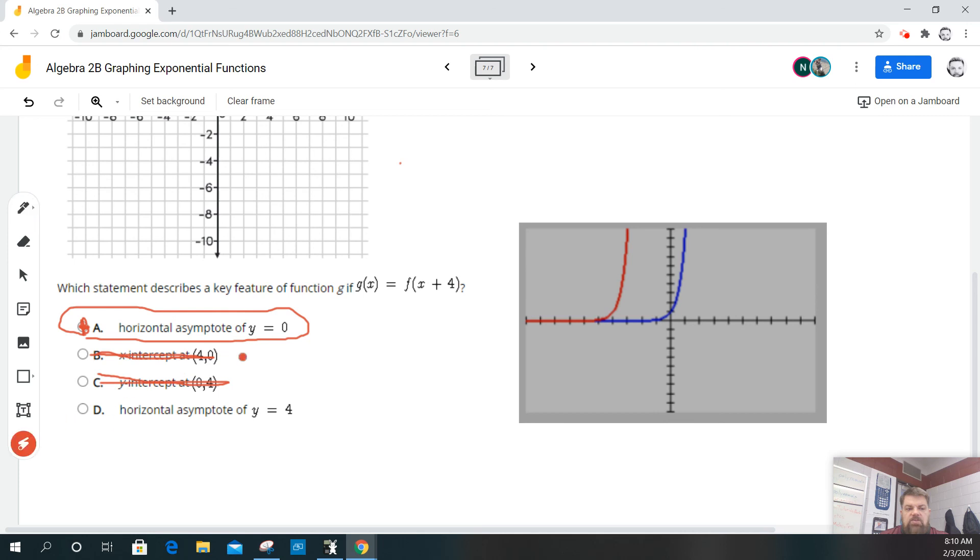And they're saying that it has a horizontal asymptote at y equals 4. That means that it never crosses this boundary. But as you can see right here, it clearly crosses y equals 4. So that's not true. So A is the answer.